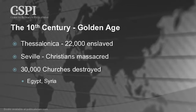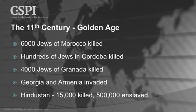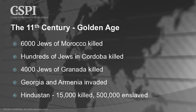6,000 Jews of Morocco — by the way, we're still in the Golden Age. 6,000 Jews in Morocco are killed. Hundreds in Cordoba are killed. 4,000 Jews in Granada are killed. Now we have the invasion of Georgia and Armenia, and in Hindustan, in one battle, 15,000 were killed and 500,000 were enslaved.